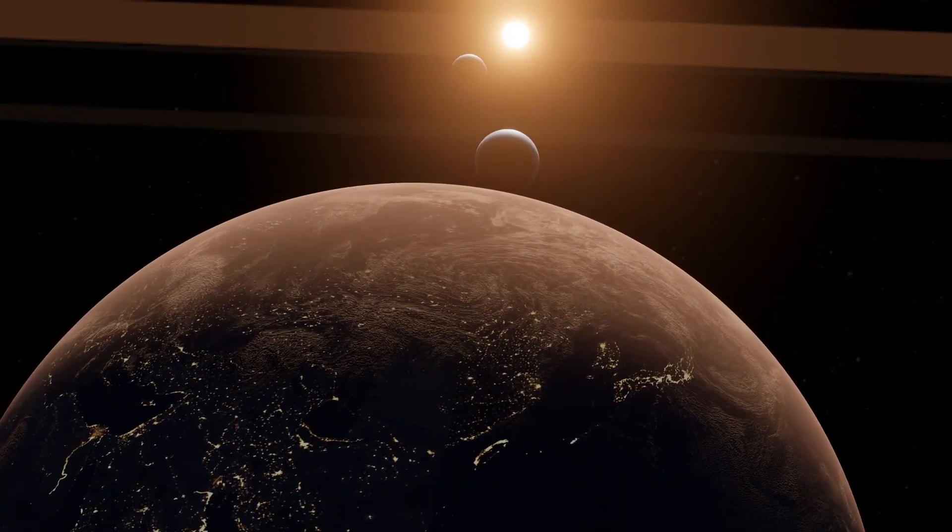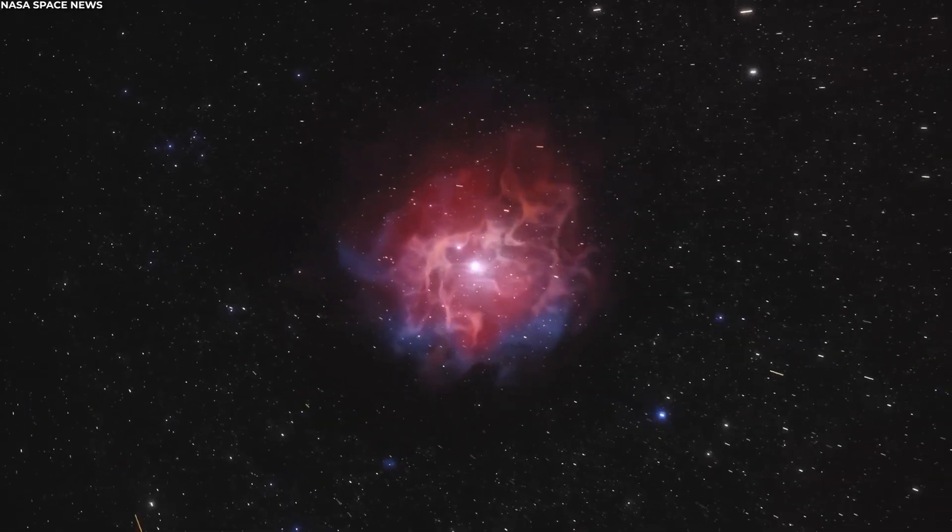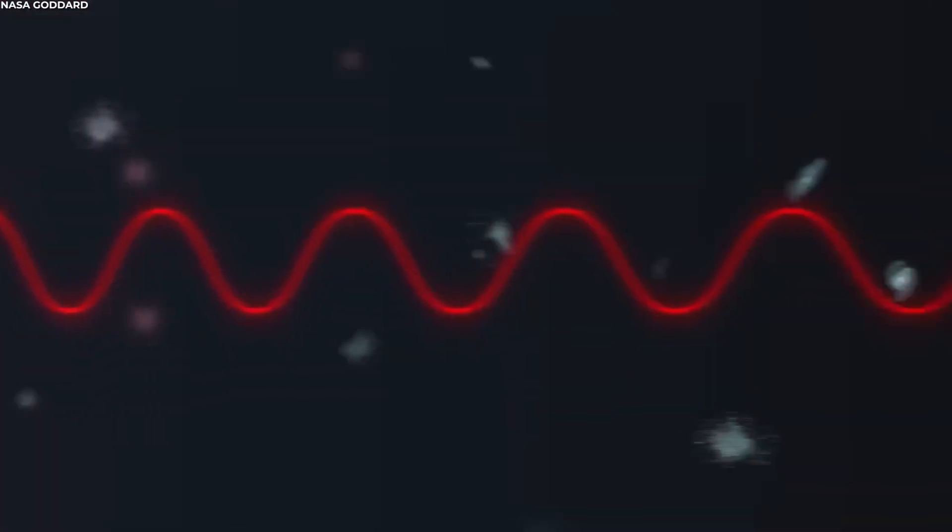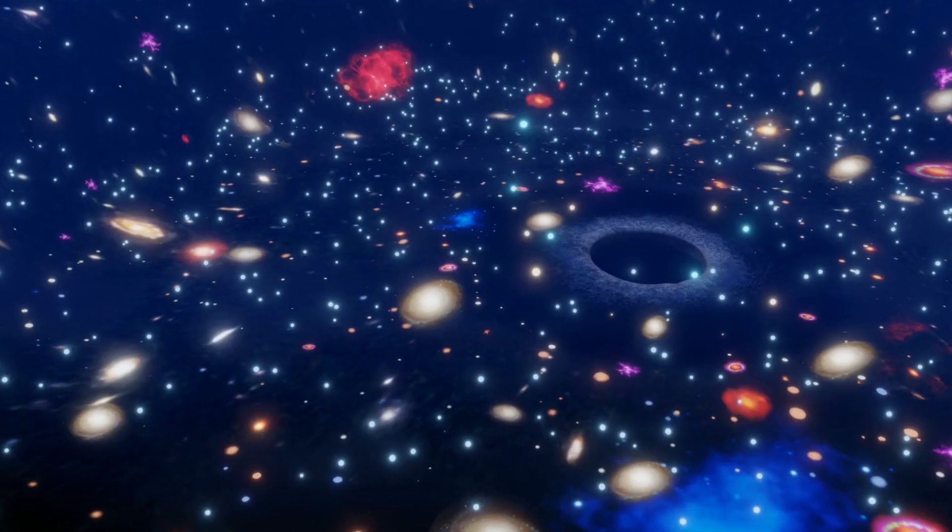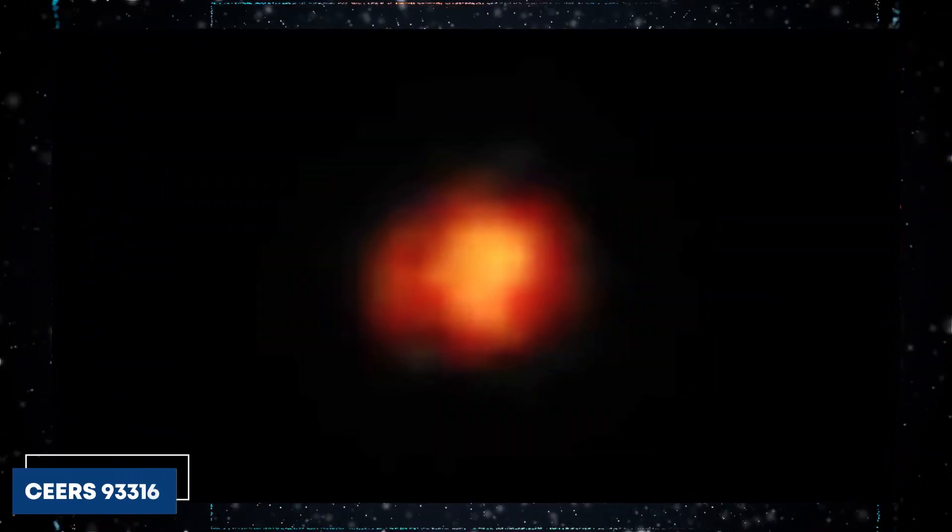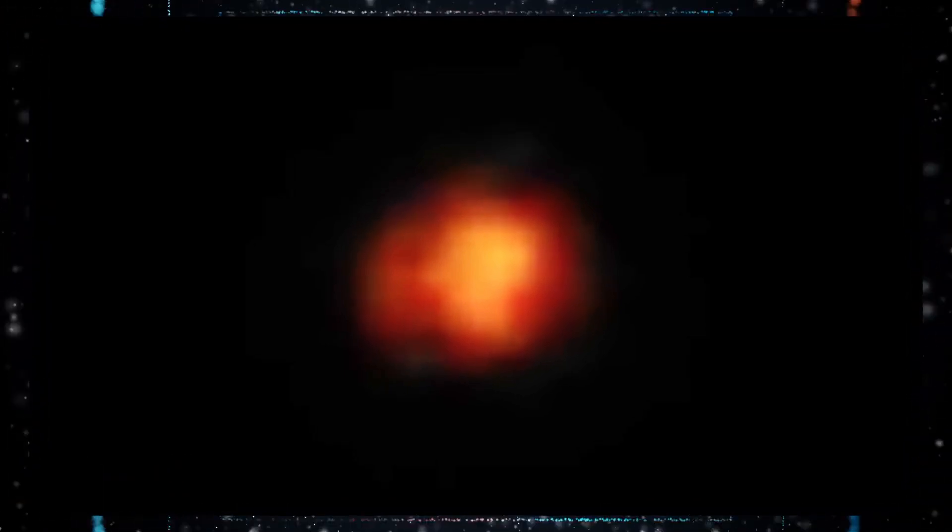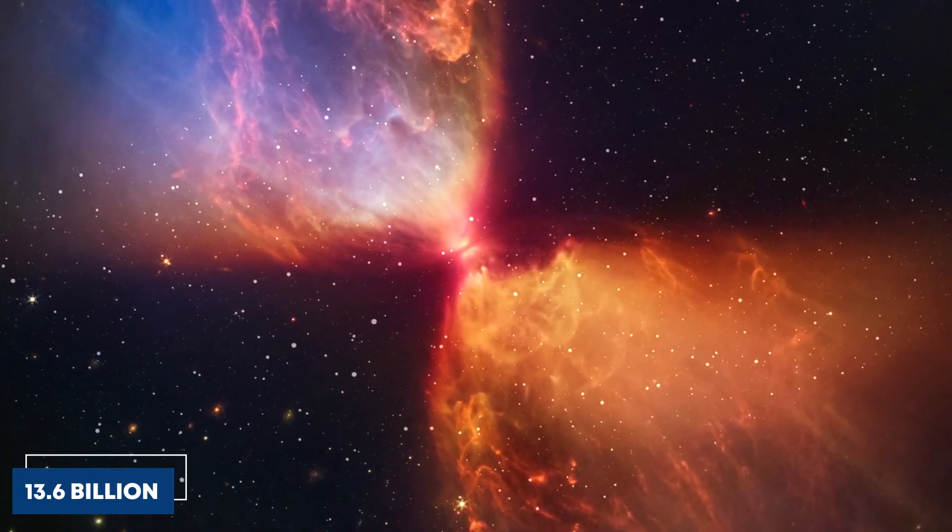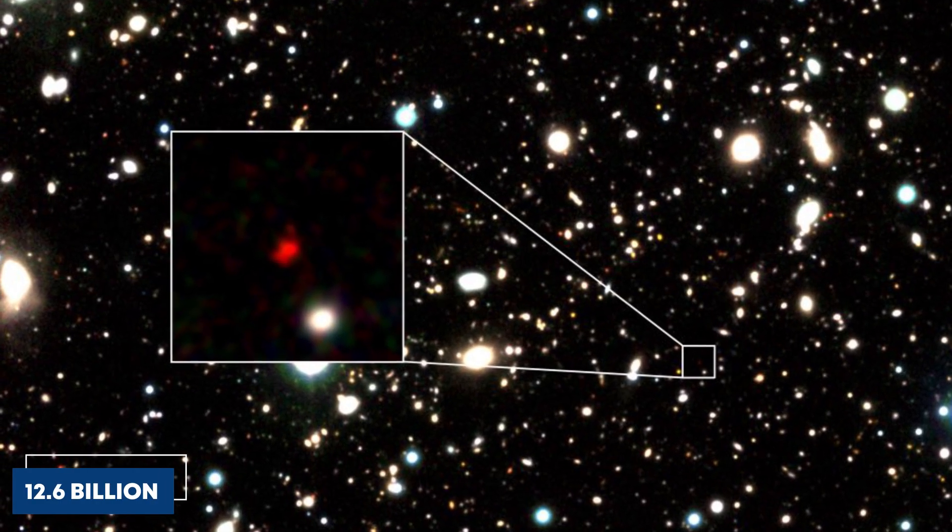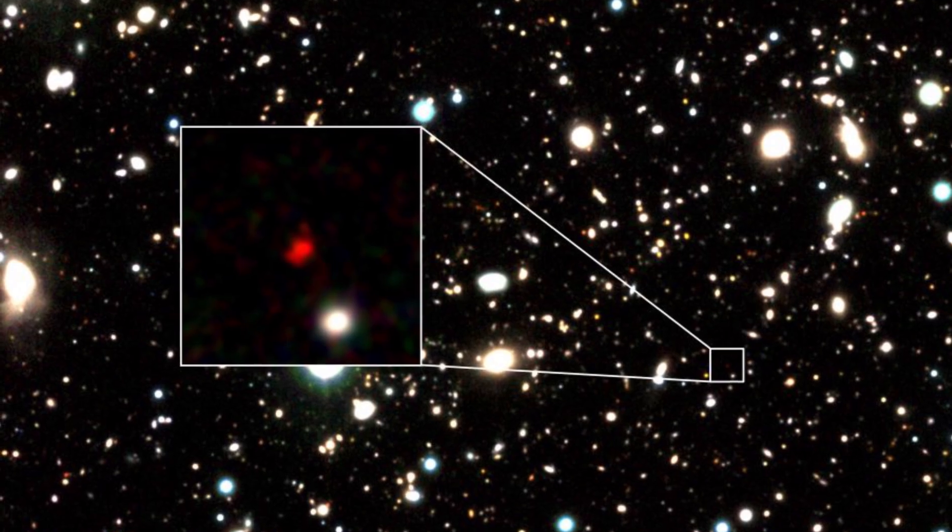But here's the catch. Figuring out exactly how far these galaxies are requires some space detective work, with spectroscopic observations, and there's much room for mistakes. For instance, a galaxy called SEARS 93316, initially thought to be a galaxy from 13.6 billion years ago, turned out to be a galaxy from 12.6 billion years ago after closer inspection.